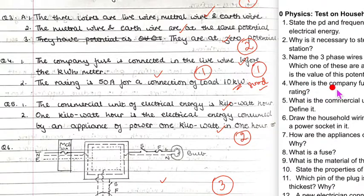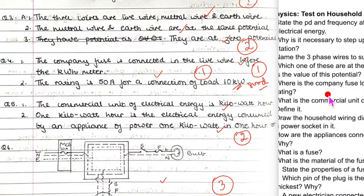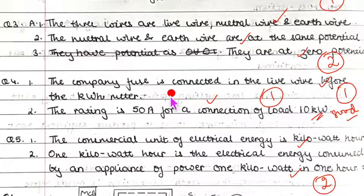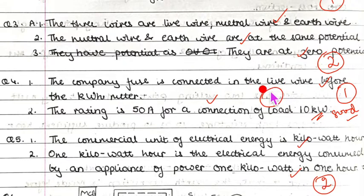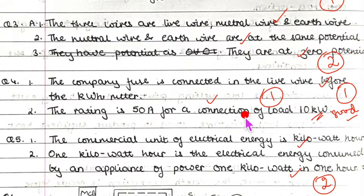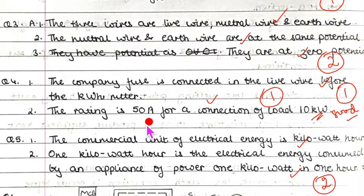Question four: Where is the company fuse located and what is its rating? The company fuse is connected in the live wire and before the kilowatt-hour meter — both of these points are important. If you write just one instead of both, you will lose marks. The rating is 50 ampere for a connection of load 10 kilowatt, and this will change according to the load.